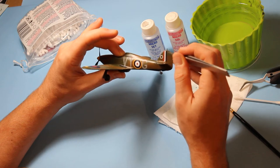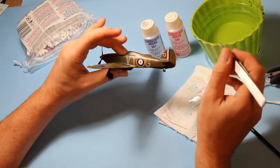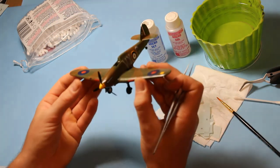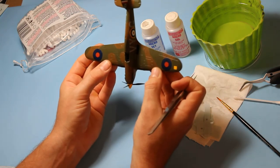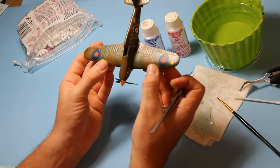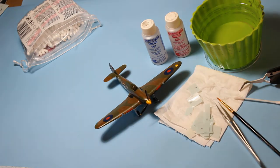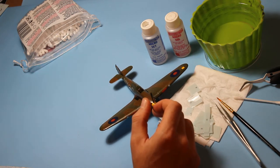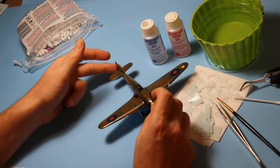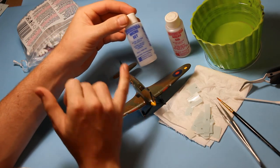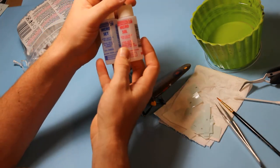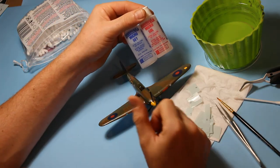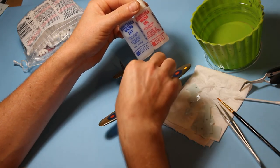Let them dry off a bit before we use the micro set. It's quite important to try and make sure everything's straight and lined up nicely. I'm quite happy with that. I'm using here micro set and micro-sole. These are very good setting solutions for decals and make them conform to the surface.